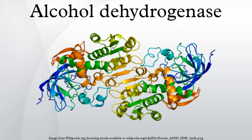Unlike humans, yeast and bacteria do not ferment glucose to lactate. Instead, they ferment it to ethanol and CO2. The overall reaction is: glucose + 2 ADP + 2 Pi → 2 ethanol + 2 CO2 + 2 ATP + 2 H2O. In yeast and many bacteria, alcohol dehydrogenase plays an important part in fermentation: pyruvate resulting from glycolysis is converted to acetaldehyde and carbon dioxide, and the acetaldehyde is then reduced to ethanol by an alcohol dehydrogenase called ADH1. The purpose of this latter step is the regeneration of NAD+, so that the energy-generating glycolysis can continue.